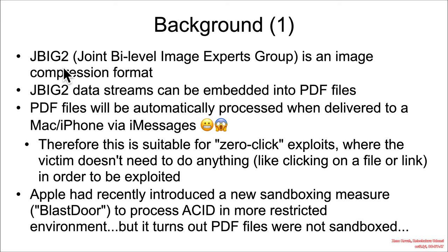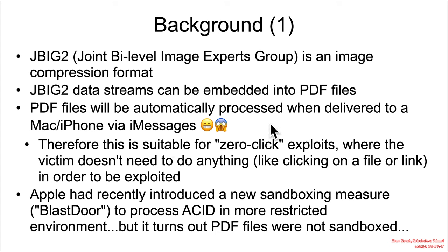JBIG2 is the Joint Bi-Level Image Experts Group — an image compression format. It's possible to embed JBIG2 data streams into PDF files, and PDF files are automatically processed whenever they're delivered to a Mac or iPhone via iMessages. That should make you nervous, because PDFs are extremely complicated things that have a long and rich history of being used as an exploitation vector.